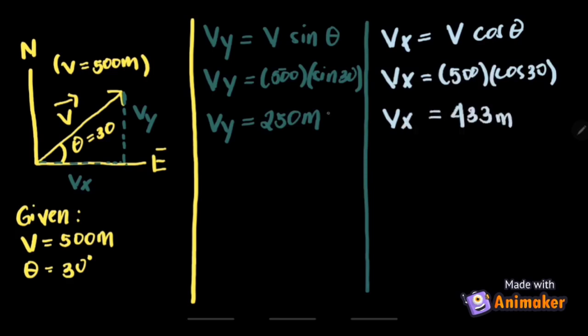Now, do not forget to indicate the direction since vectors have both magnitude and direction. With this, we were able to specify a vector in a given coordinate system because the magnitude and angle were given.